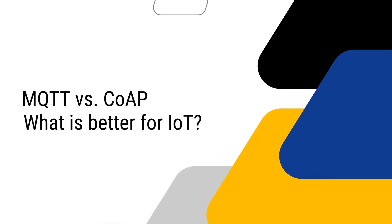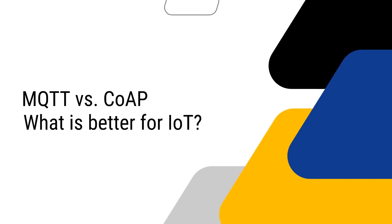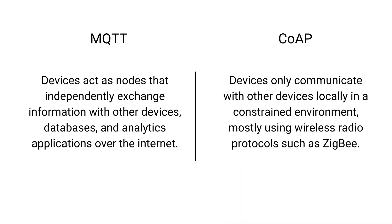So which protocol is better for IoT? In MQTT, devices act as nodes that independently exchange information with other devices, databases, and analytics applications over the Internet. In CoAP, devices only communicate locally in a constrained environment, mostly using wireless radio protocols such as ZigBee, and data is only routed over the Internet to other groups of CoAP devices through a gateway.